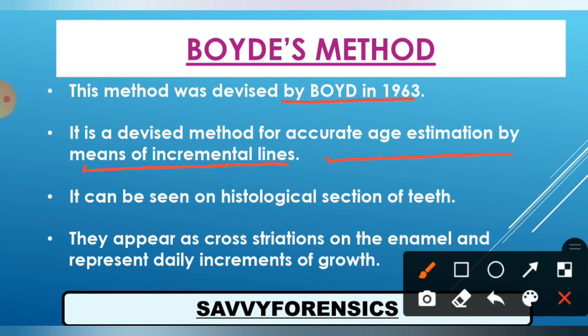It can be seen on the histological section of teeth. On the histological section of a tooth, these lines are very clearly visible. They appear as cross striations on the enamel and represent daily increments of growth. These cross striations on the enamel reflect the daily growth occurring on the enamel and are visible as incremental lines.